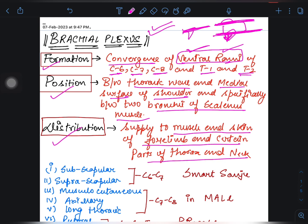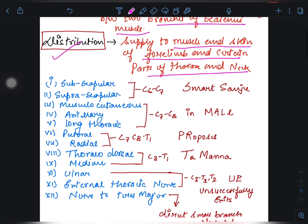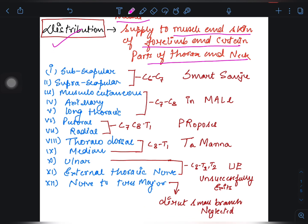Now there are certain nerves comprising of brachial plexus. Those are written as follows: first is subscapular, then suprascapular, then musculocutaneous, then axillary, then long thoracic, then pectoral, radial, thoracodorsal, median, ulnar, external thoracic nerve, and nerve to teres major. Now from exam point of view, it's a very very very difficult task to learn these nerves. So I made a simple trick by which you will be able to memorize these nerves very easily.